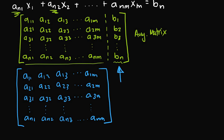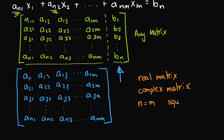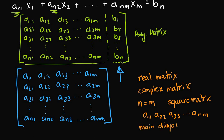Let's finish with a few definitions. A real matrix means every element inside the matrix is a real number. If a matrix had imaginary elements, it would be called a complex matrix. If n equals m — meaning the number of rows equals the number of columns — then we call it a square matrix. The terms a₁₁, a₂₂, a₃₃, all the way up to aₙₙ are called the main diagonal elements.